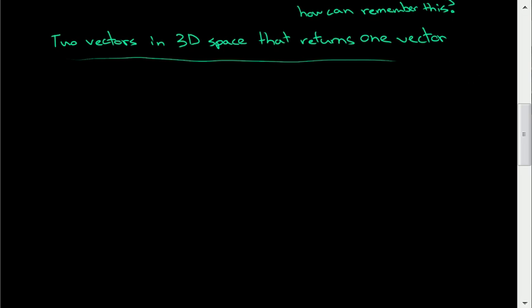All you have to do is know 2, 3, 1. 2, 3, 1. Again, that's two vectors, 3D space, that returns one vector. And so, what does this have to do with anything?